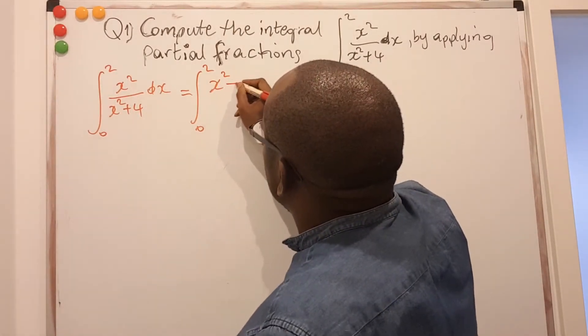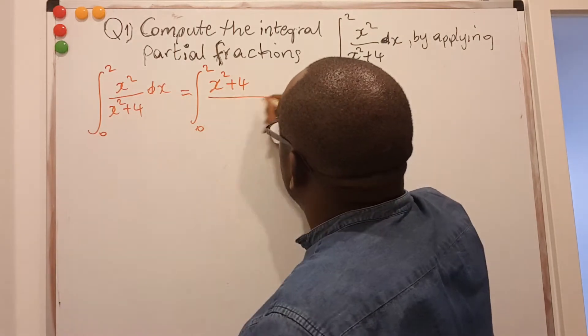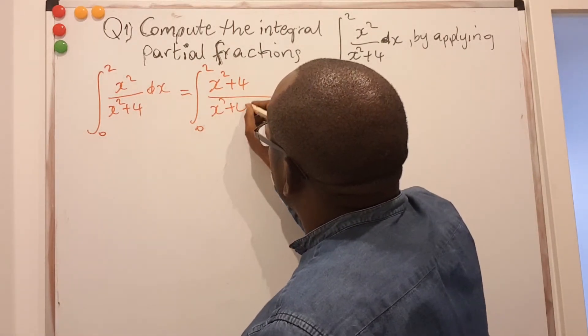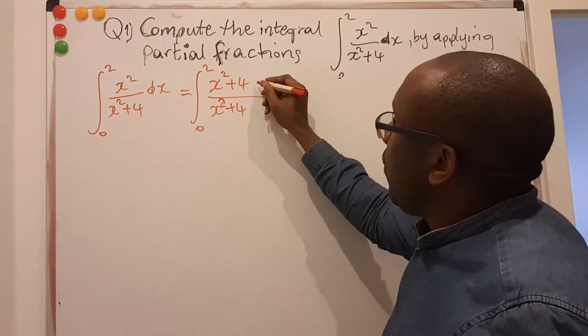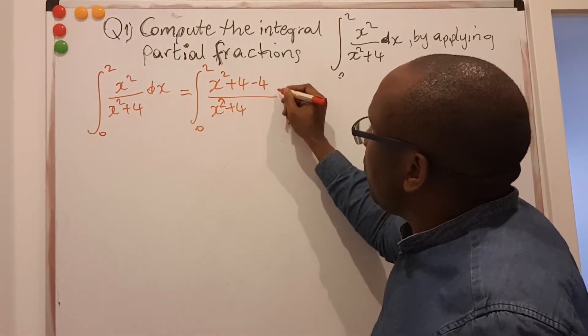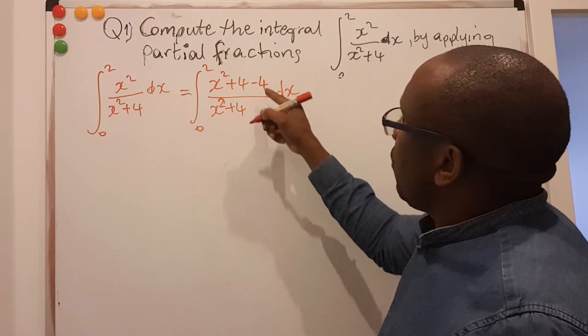So this is x squared plus 4, I can just put plus 4 there. x squared plus 4. This is nice, but I just added a 4 that was not there before. That's not mathematically correct, so I have to remove it.